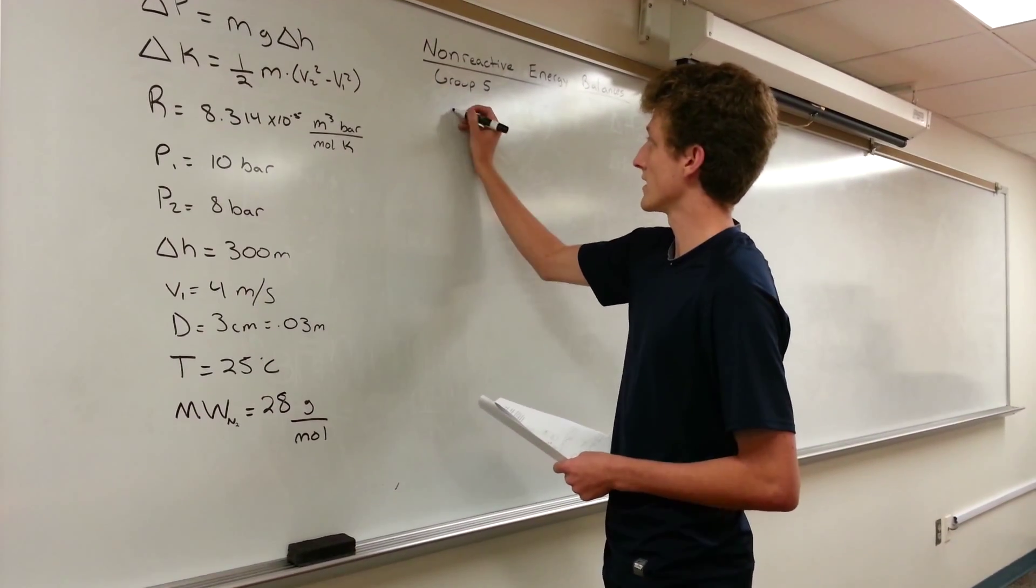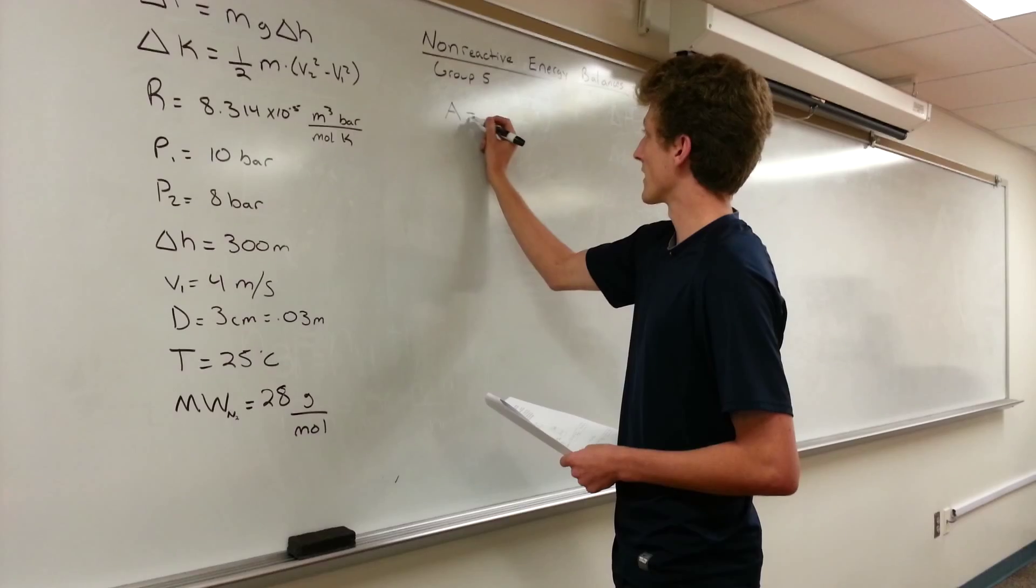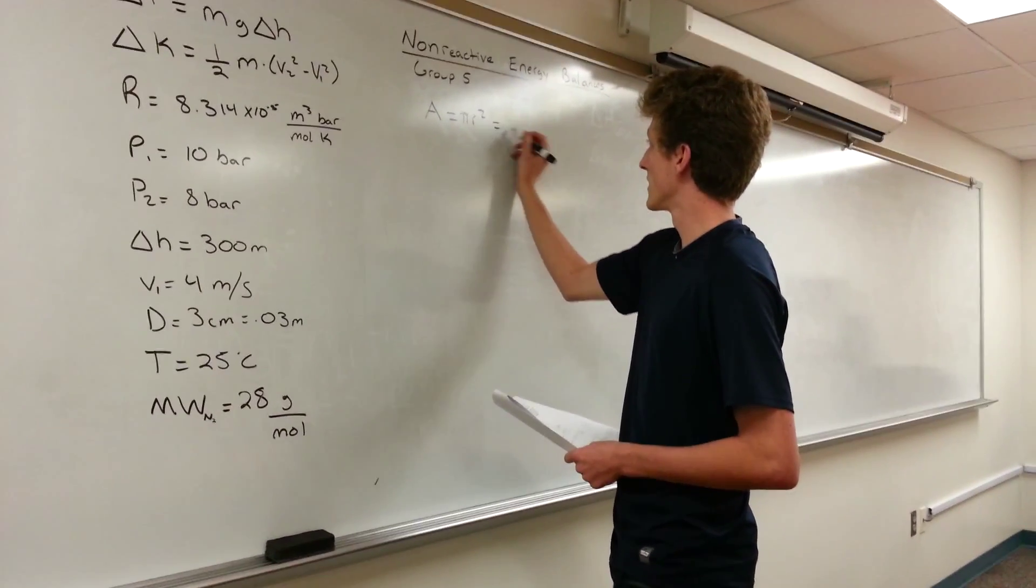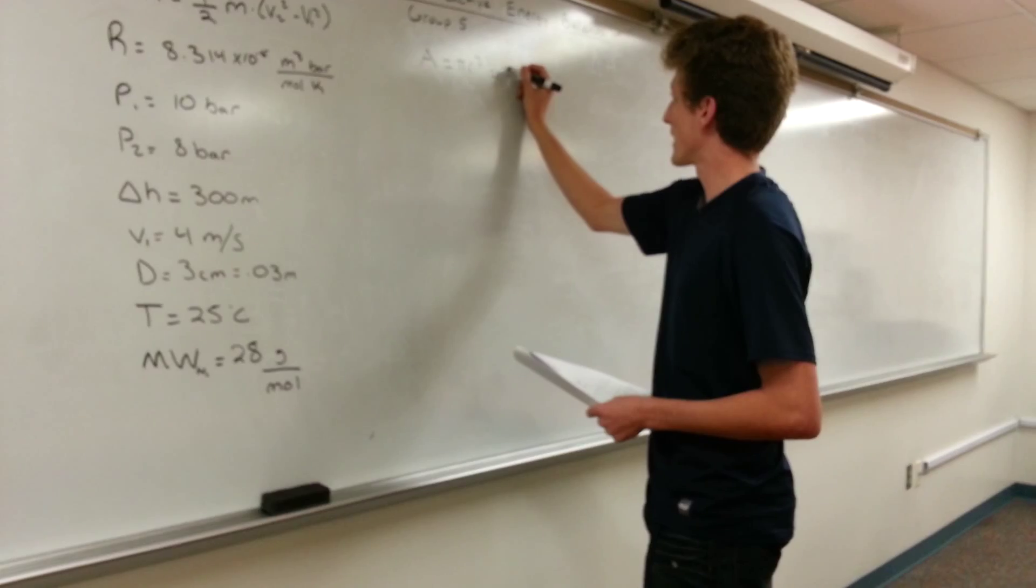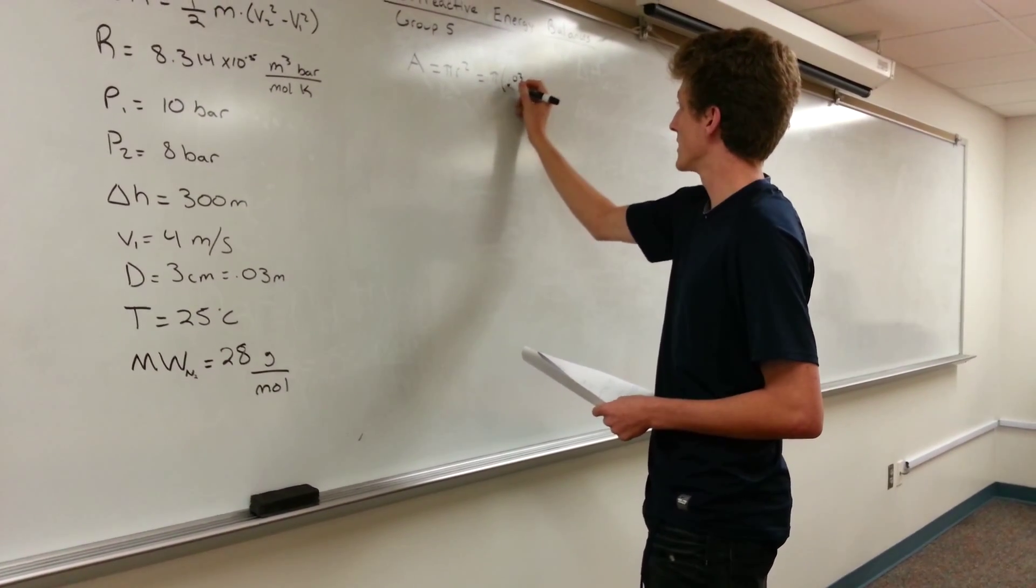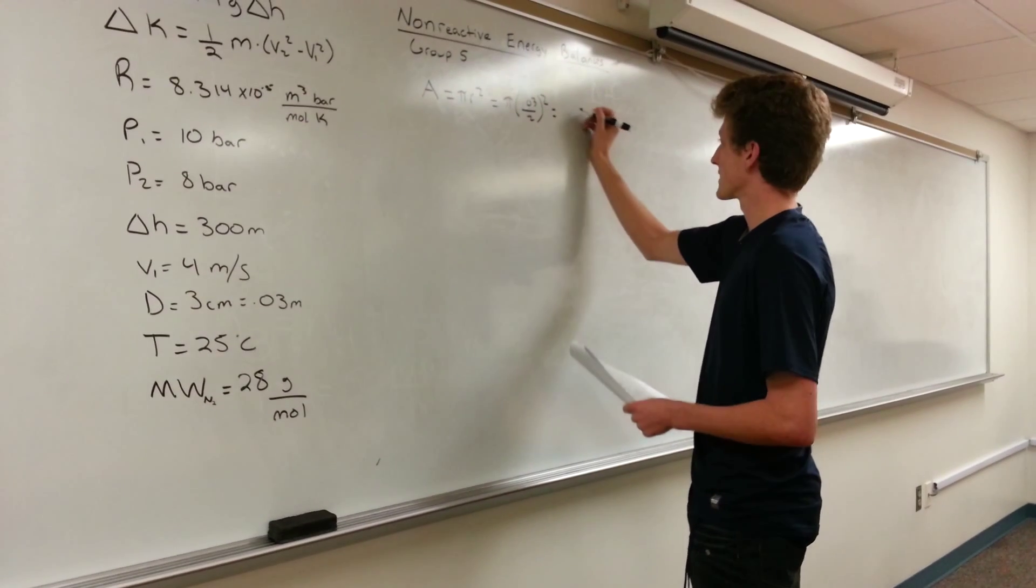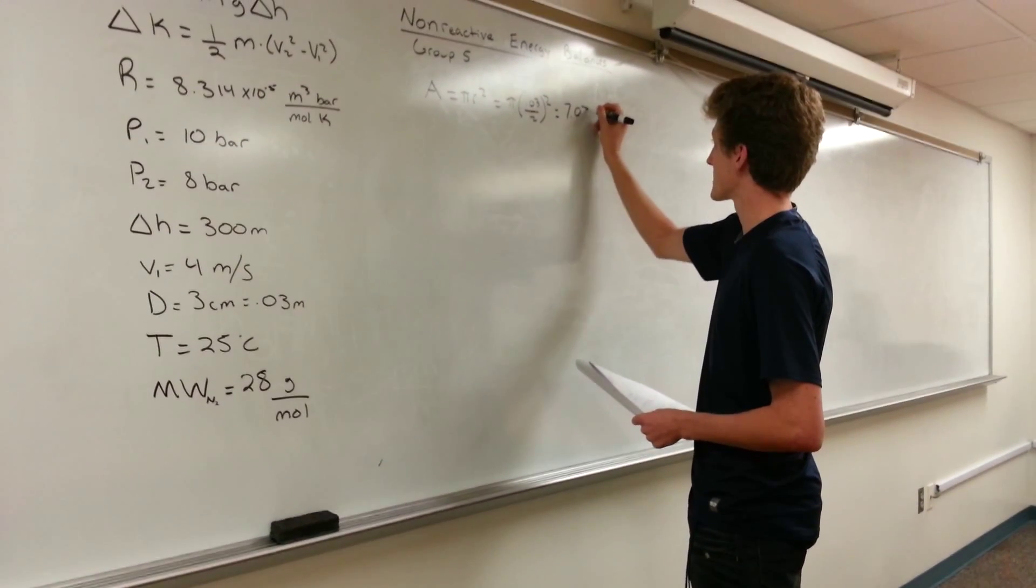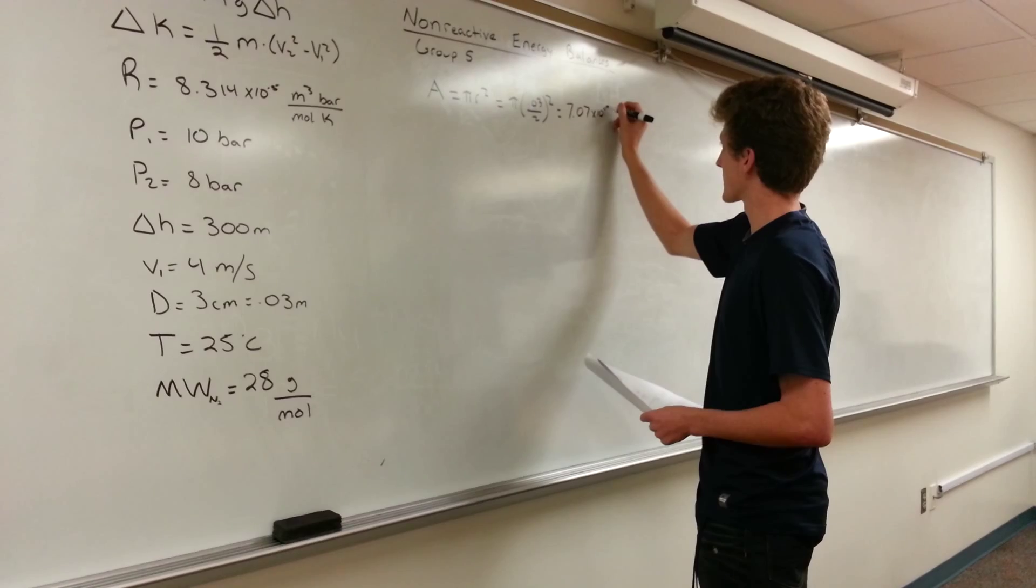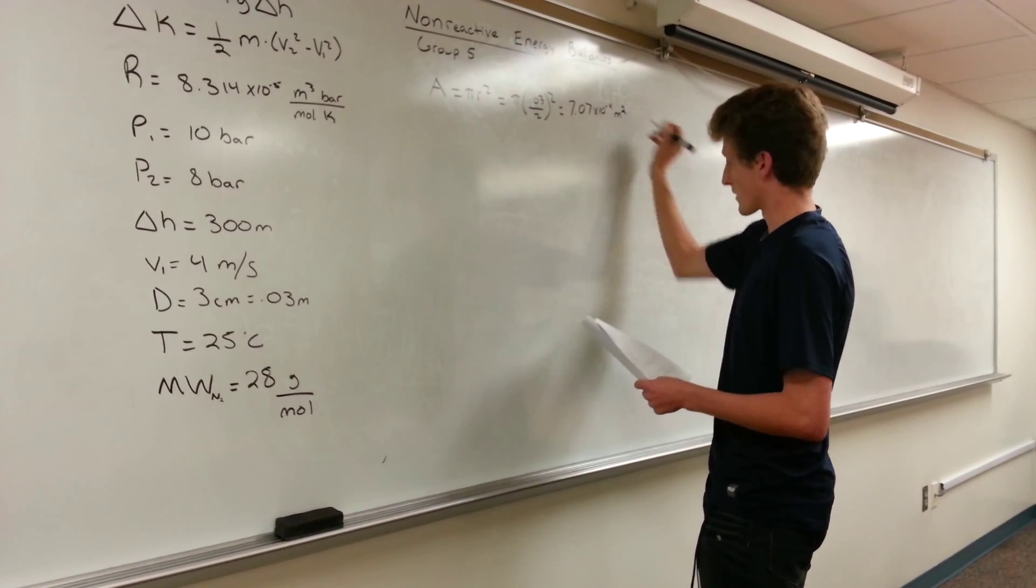The first thing we are going to do is calculate the area. The area equals pi r squared which equals pi times 0.03 over 2 squared. This will give us a value of 7.07 times 10 to the negative 4 meters squared.